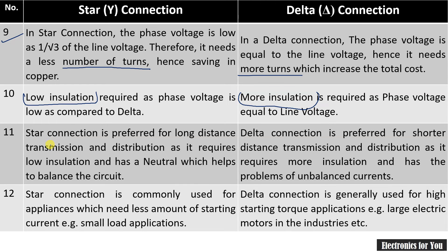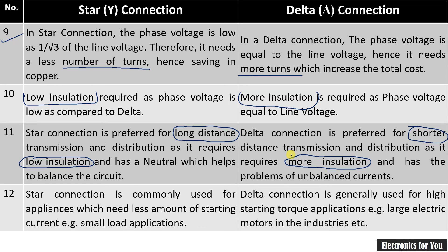The next point is also related to these factors. Star connection is preferred for long-distance transmission, whereas delta connection is preferred for shorter-distance transmission. This is because in star connection, voltages are low so low insulation is required, whereas in delta connection more insulation is needed as it has to handle high voltage.